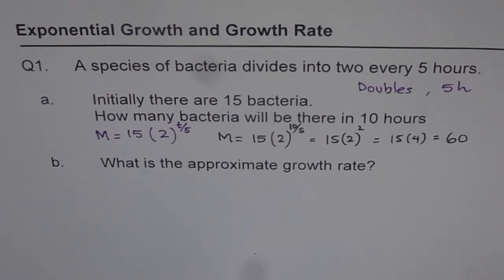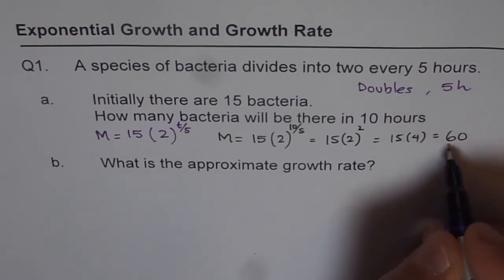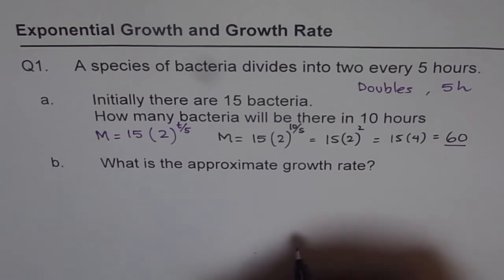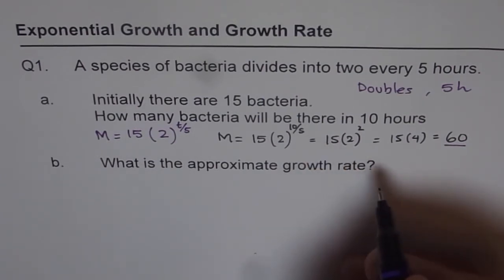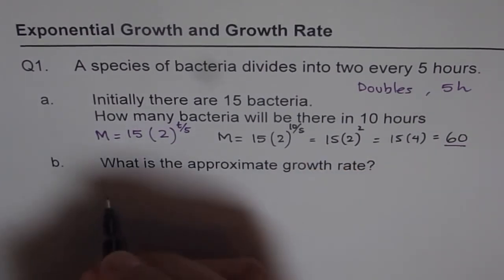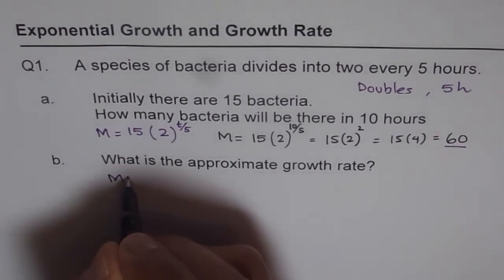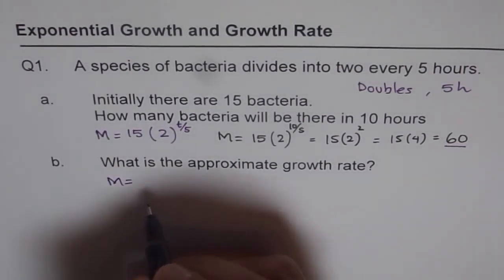Now let us move on to part B, which is what is the approximate growth rate? Now growth rate, how can we find that? To find growth rate, what we will do is, we will utilize the information which we got from part A. That is, in 10 hours, we have 60 bacteria.